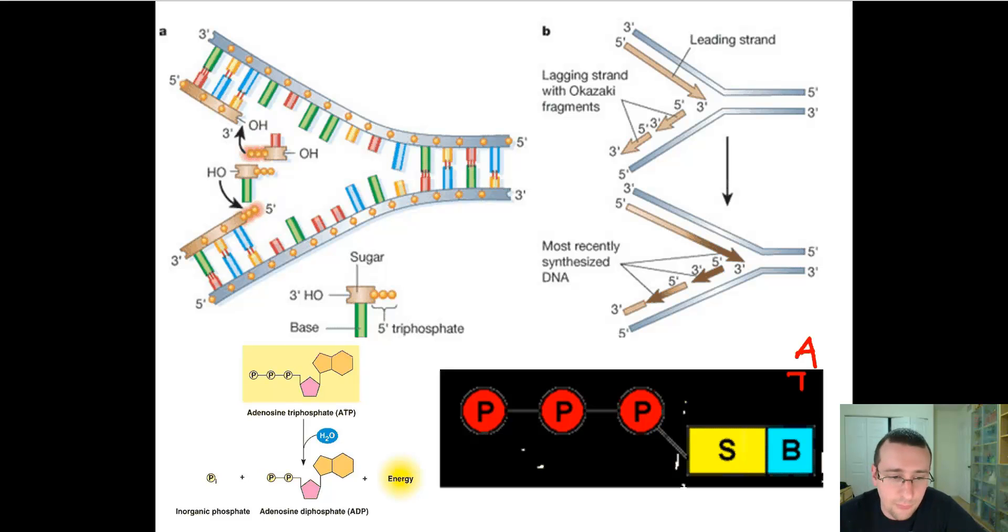Of course, the base will vary. It could be adenine, it could be thymine, it could be cytosine, or it could be guanine. But basically, this will be the structure of the nucleotides before they're added to the DNA strand. And the principle here is based on the fact that there's a lot of energy stored in those bonds between the phosphate groups. And if you break those bonds, you're going to release the energy, kind of like it happens with ATP in the cell. And so, if you have these molecules, the nucleoside triphosphates that you see here, and they have those three phosphate groups,